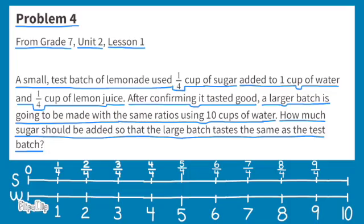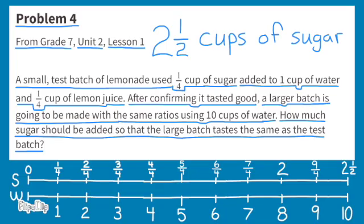And the top number line represents sugar, so we will be counting by one-fourth cups of sugar. For 10 cups of water, we'd have ten-fourths cups of sugar, and ten-fourths cups of sugar is equivalent to two-and-a-half cups of sugar. So for the larger batch, we would need two-and-a-half cups of sugar.